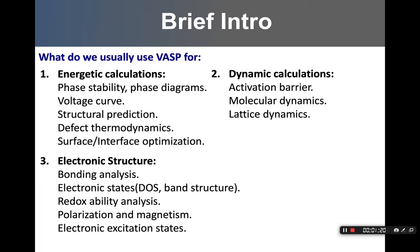A brief introduction about what we can do by using VASP and by running DFT calculations. There are basically three types: energetic calculations, dynamic calculations, as well as electronic calculations. Energetic calculations basically come from the total energy of a system. We can use that to estimate properties such as phase stability, construct phase diagrams, build voltage curves — especially for secondary batteries — and predict the most stable structures, defects, as well as configurations for surfaces and interfaces.